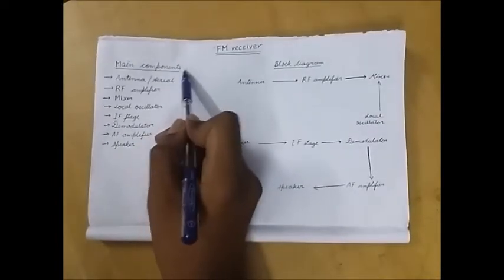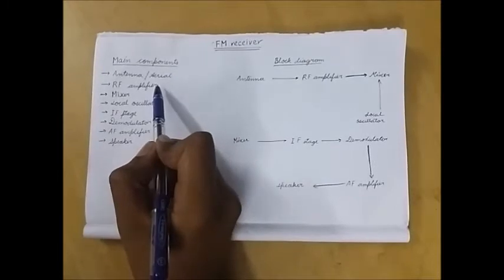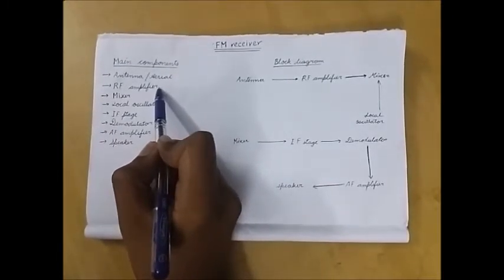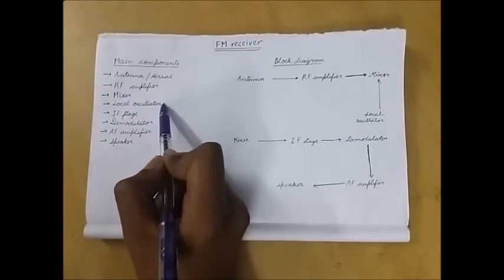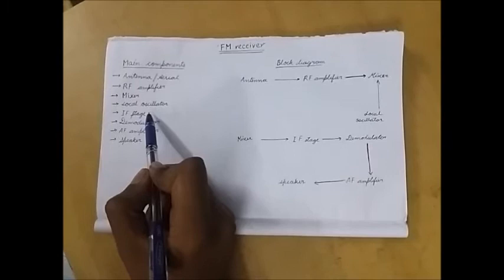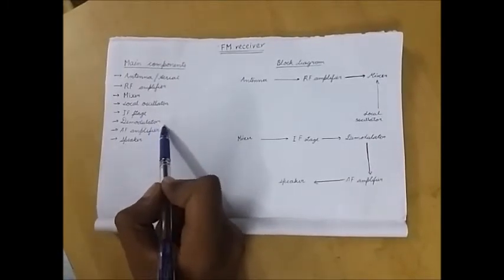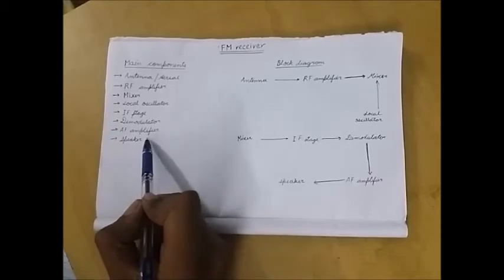The main components of FM receiver are the antenna also called the aerial, RF amplifier which consists of RF filter also, the mixer, the local oscillator, IF stage which consists of IF filter and IF amplifier, demodulator, AF amplifier or audio frequency amplifier and the speaker.